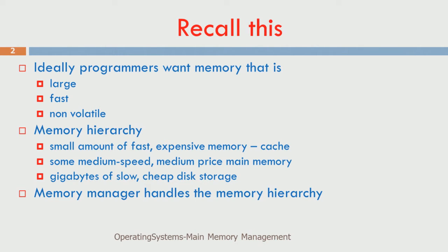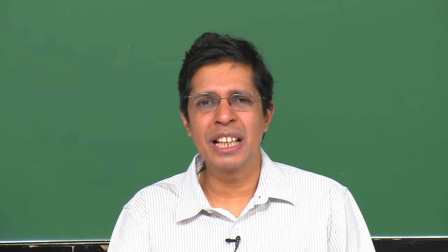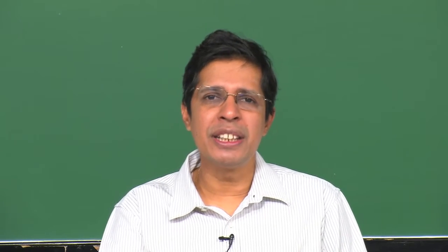What does the programmer want? As per the von Neumann model, the program should reside in memory and the CPU only talks to memory. The programmer wants to write large programs, execute them fast, and store them for multiple executions. So the 3 requirements from memory are: it should be large, fast, and non-volatile. These are 3 orthogonal parameters — improving one will deteriorate the others.